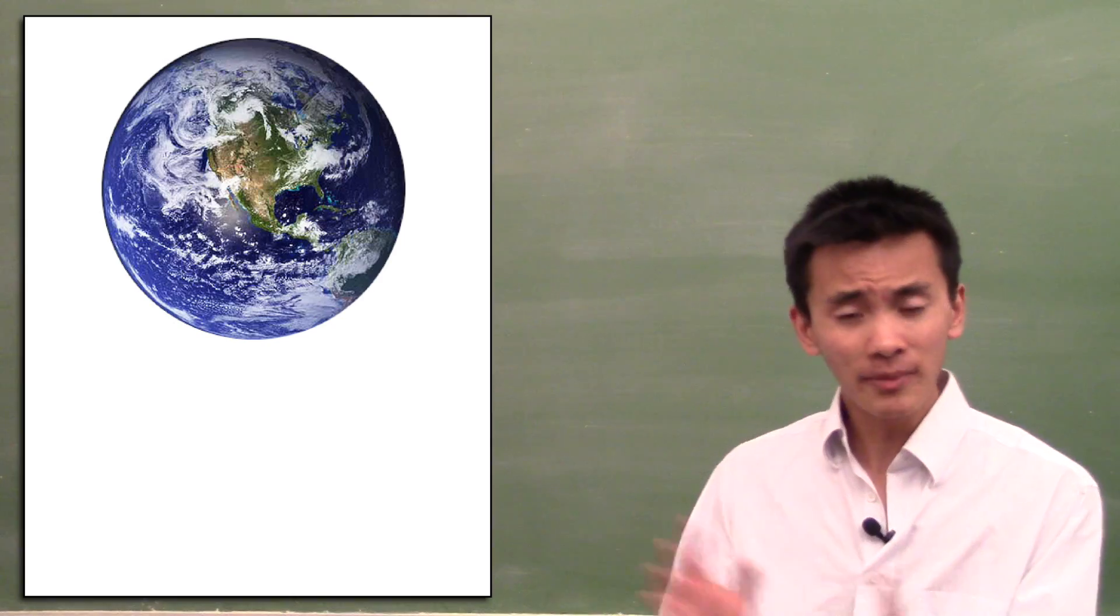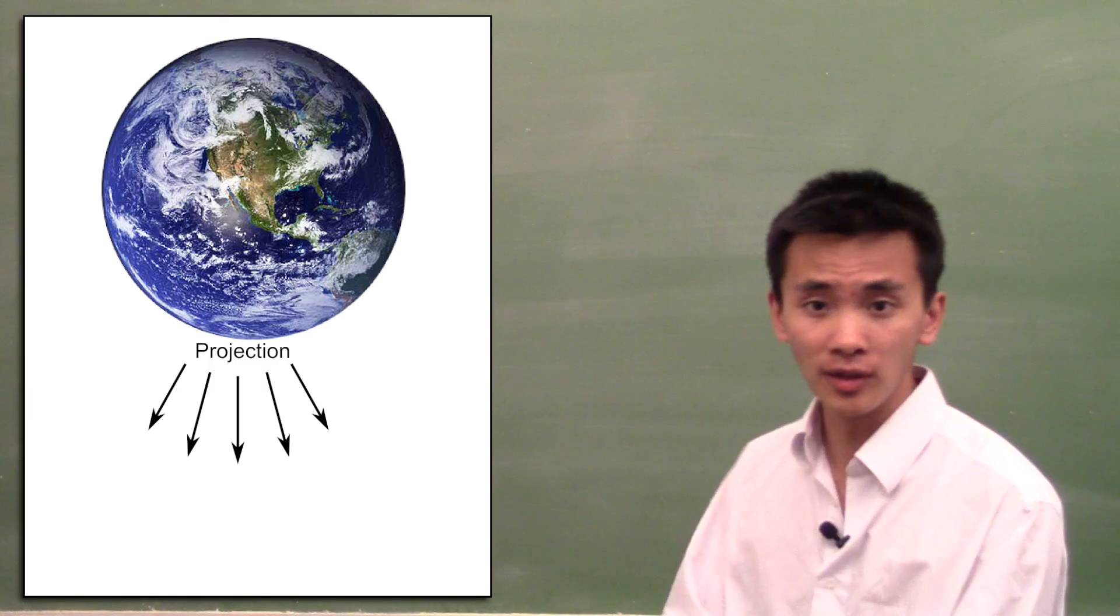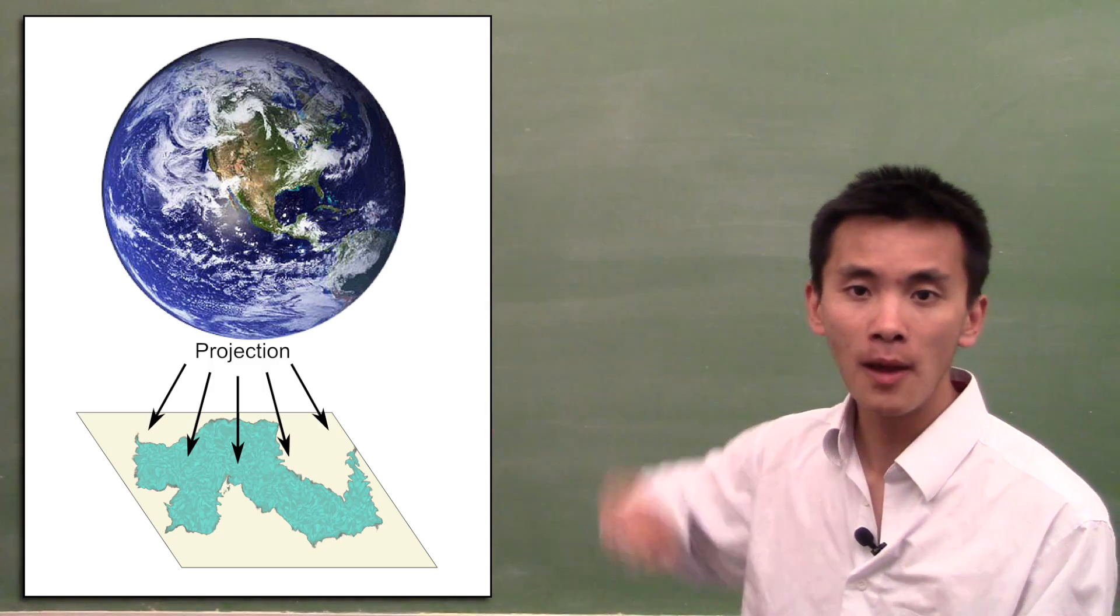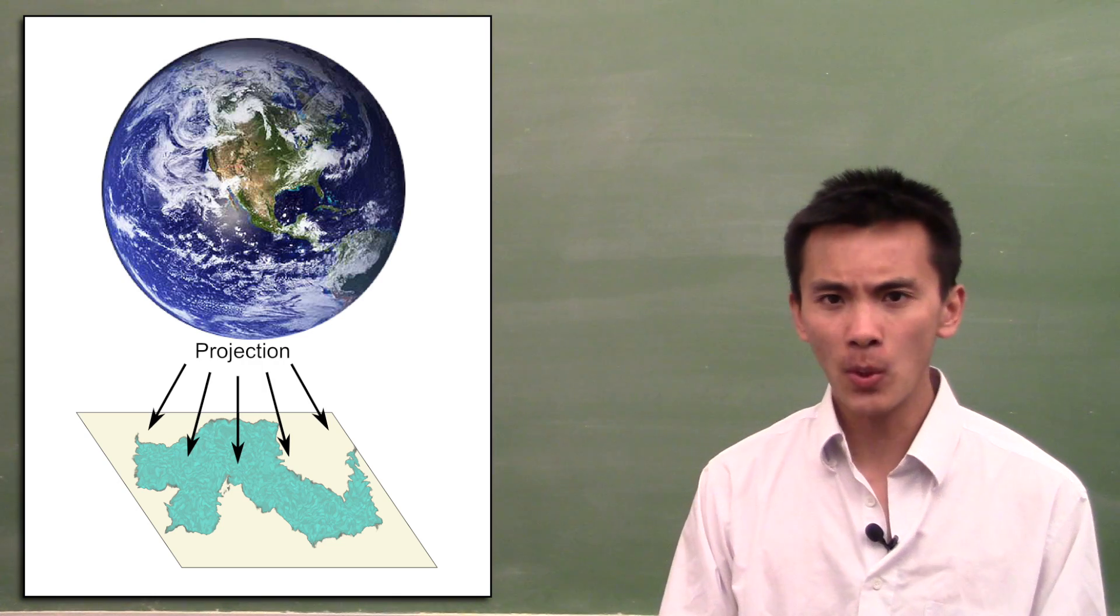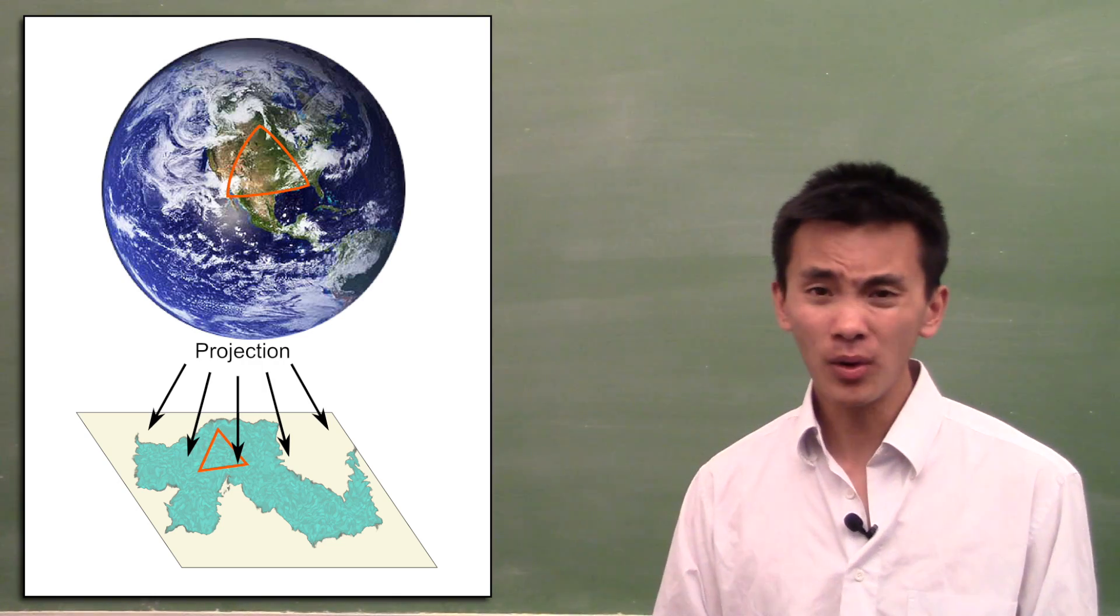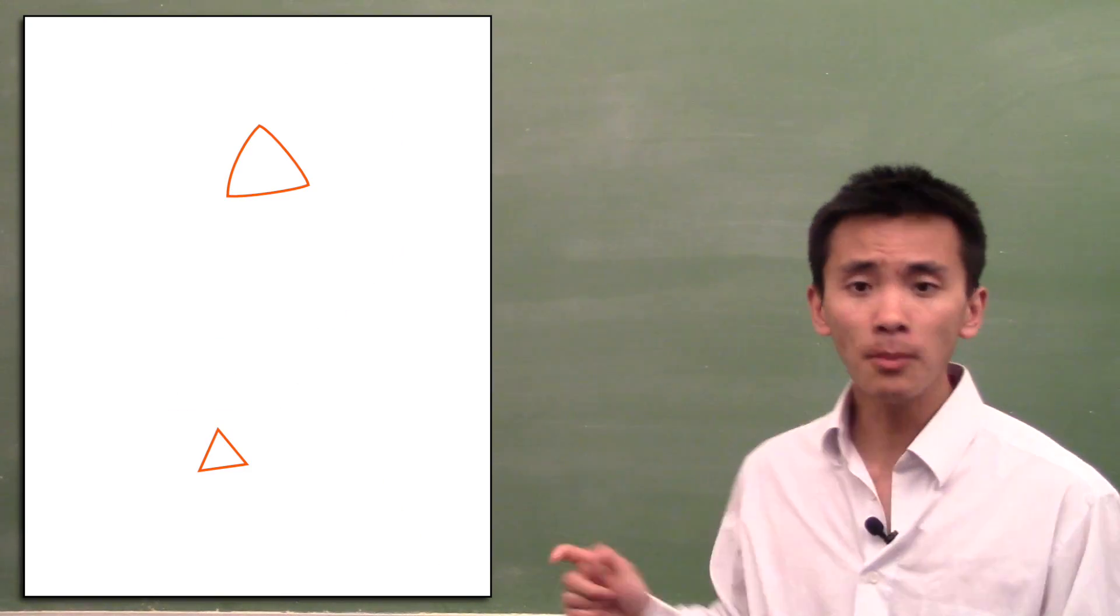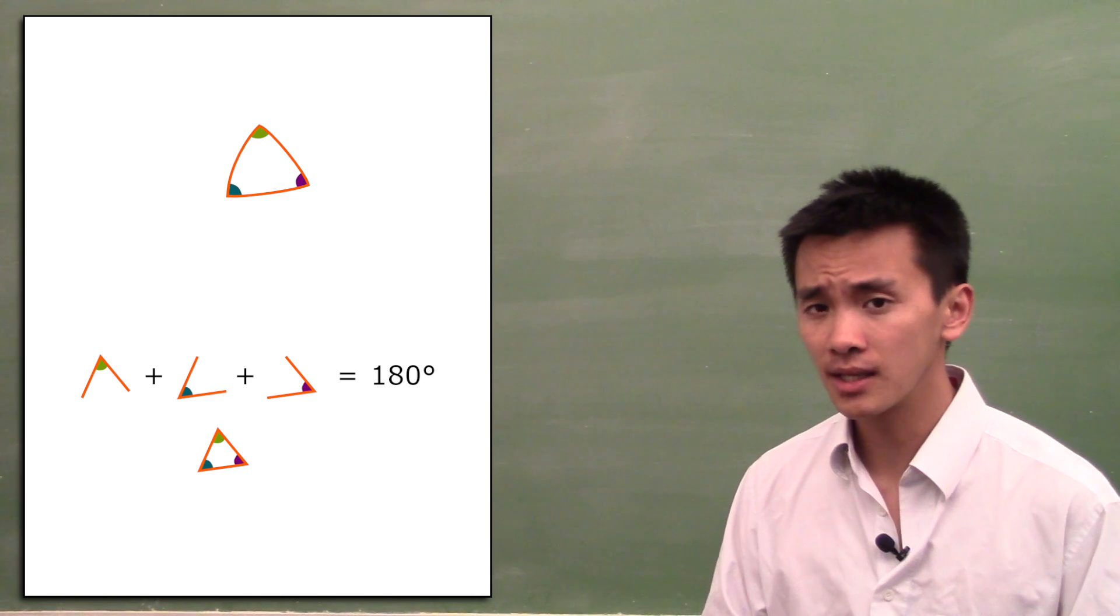Imagine you could make a perfect map of the Earth in a flat two-dimensional plane. Then if you draw a triangle on your map, it should correspond to a triangle on the Earth. But the sum of the angles of a triangle on a plane always add up to 180 degrees.